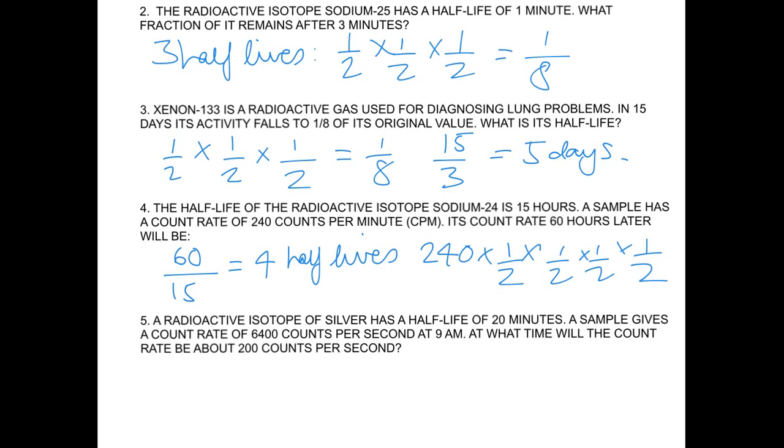And that is the same as 240 times 1 half 4 times, and that is 15 as my answer. So its count rate after 4 half-lives have occurred, so I've divided 240 by 2, or times them by 1 half 4 times, and I have got 15. So that's 15 counts per minute.